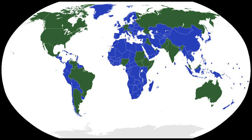The five largest unitary states by nominal GDP are China, Japan, the United Kingdom, France, and Italy. The five largest by population are China, Indonesia, Bangladesh, Japan, and the Philippines. The five largest by area are China, Kazakhstan, Algeria, the Democratic Republic of Congo, and Indonesia.